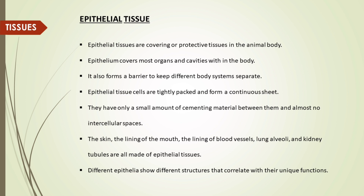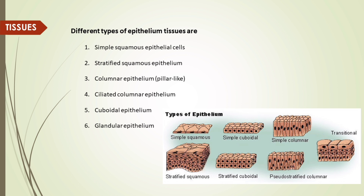They have only a small amount of cementing material between them and almost no intercellular spaces. The skin, the lining of the mouth, the lining of blood vessels, lung alveoli and kidney tubules are all made up of epithelial tissues. Different epithelia show different structures that correlate with their unique functions.